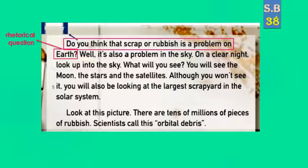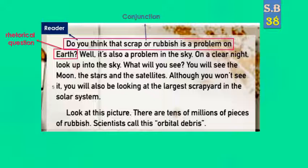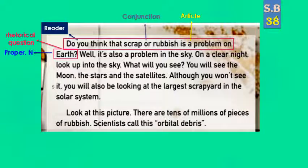Here we have 'you' — it refers to the reader or readers. Here we have 'or' — it is a conjunction, أداة ربط. 'A' is an article, أداة تعريف. And here we have 'air' — it is a proper noun.